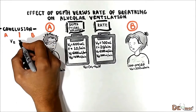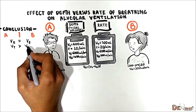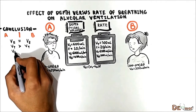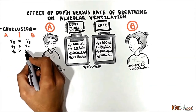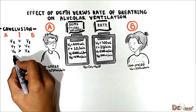The tidal volume in Patient A is more than in Patient B. Patient A is breathing deeply at 600 mL, while Patient B has rapid shallow breathing at 300 mL. Both use 150 mL for the dead space, which does not participate in gas exchange in the alveoli. Therefore, alveolar ventilation in Patient A will be more than in Patient B — 450 mL versus 150 mL respectively.